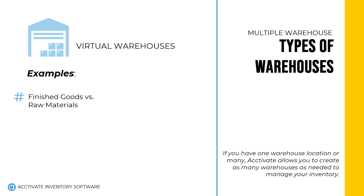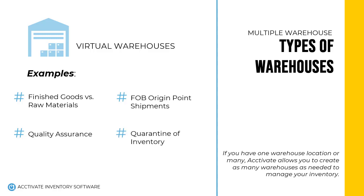Some examples of virtual warehouses are finished goods warehouses versus raw materials warehouses, in-transit warehouses when you order containers from overseas but you need to show ownership of the goods before delivery, and assigning your inventory to a quality assurance warehouse before it's released for sales. Or you may just need to quarantine your inventory for a specific time period before releasing it.